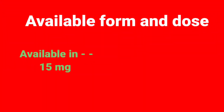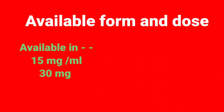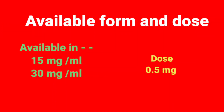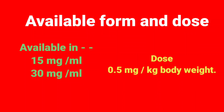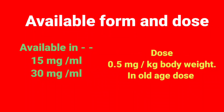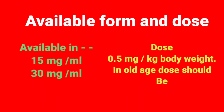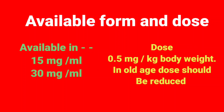Available forms and dose: Ketorolac is available as 15 mg per ml and 30 mg per ml. The dose is 0.5 mg per kg body weight. In old age, the dose should be reduced.